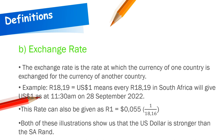This exchange rate was accurate as at 11:30 AM on 28 September 2022. There is a specific reason for stating the time and date — exchange rates never stay the same, they're always changing, always going up or going down. This rate can also be given as one rand is equivalent to 0.55 US dollars, so there are two ways of expressing an exchange rate.